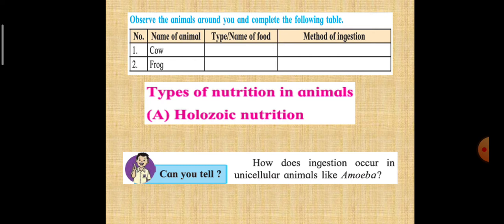Next is types of nutrition in animals. The type A is holozoic nutrition. Can you tell how does the ingestion occur in unicellular animals like amoeba? Think about it.